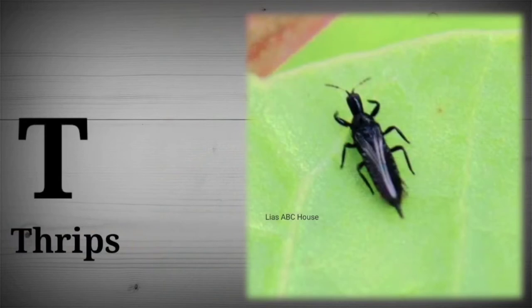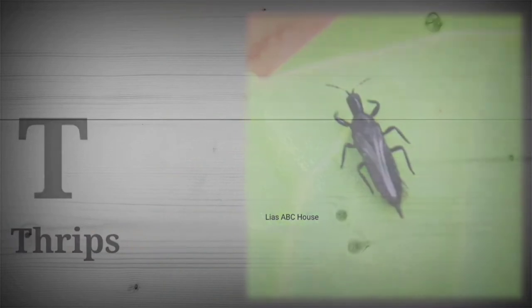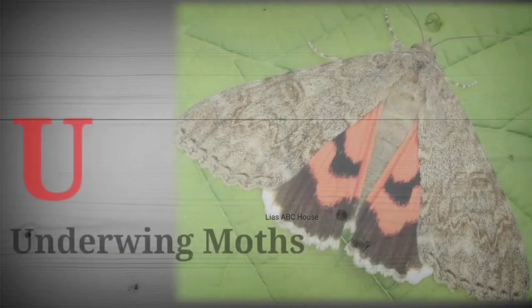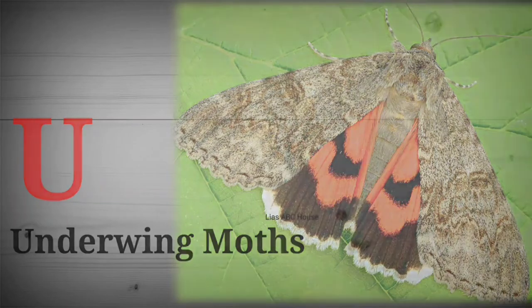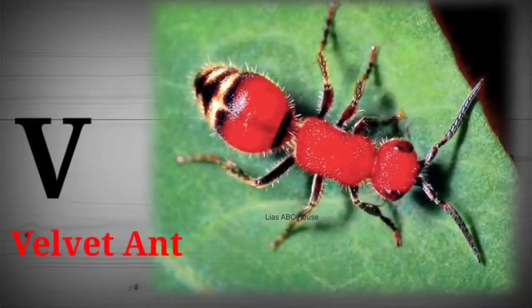T is for Dribbs. U is for Underwing Marked. V is for Violet End.